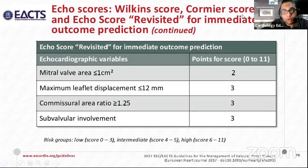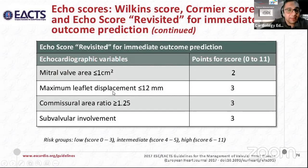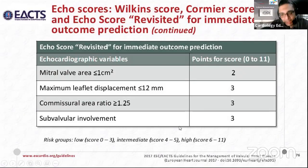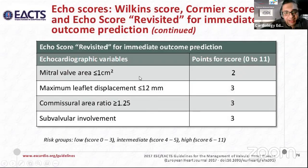The Cormier score is for immediate outcome prediction. Echocardiographic variables include: mitral valve area less than 1 cm² (2 points), maximum leaflet displacement less than 12 mm (3 points), commissional area ratio more than 1.25 (3 points), and subvalvular involvement (3 points). Scores range: low group 0–3, intermediate 4–5, high 6–11. A lower score indicates more favorable anatomy and predicts a more favorable immediate outcome after PMC.